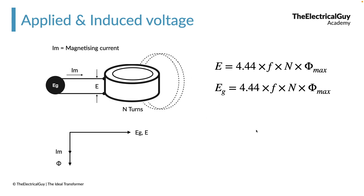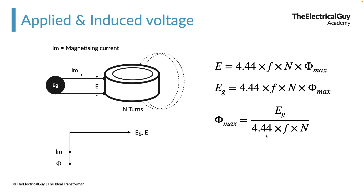Since eg equals e, we can write the equation as: φmax = eg / (4.44 × f × N). This equation is also very important because it tells us that the value of flux depends upon the applied voltage. Since 4.44 is constant, frequency remains constant, and number of turns won't change for a particular coil — the only parameter that remains is the applied voltage eg. Therefore, the value of flux depends entirely upon the applied voltage eg.